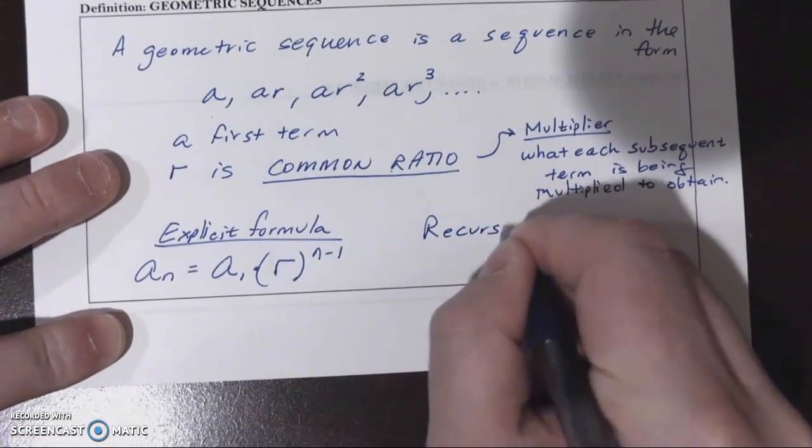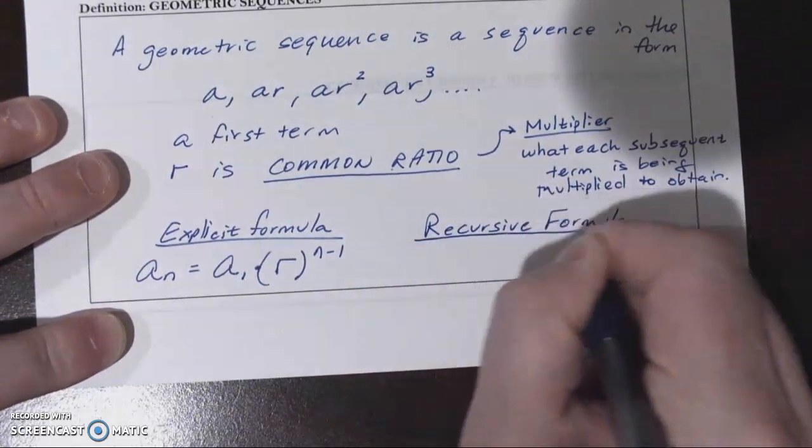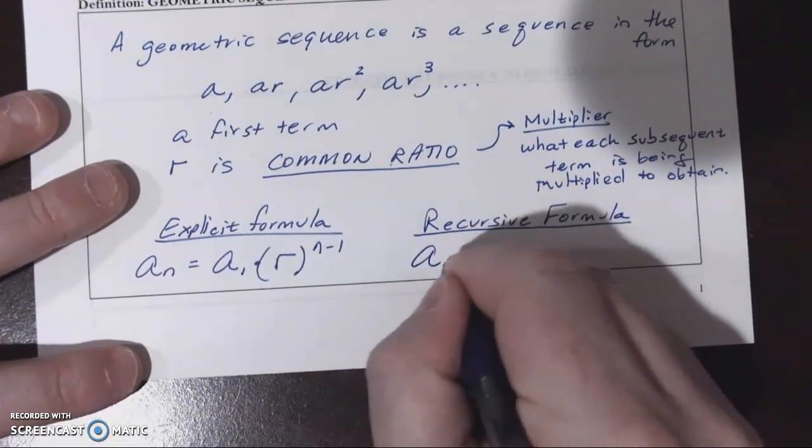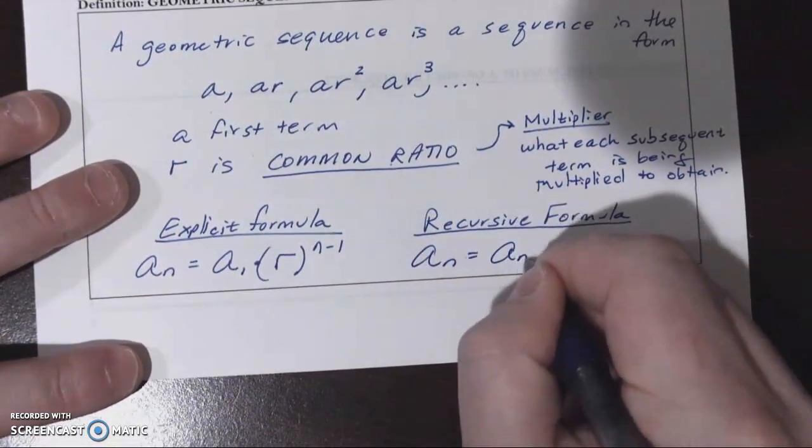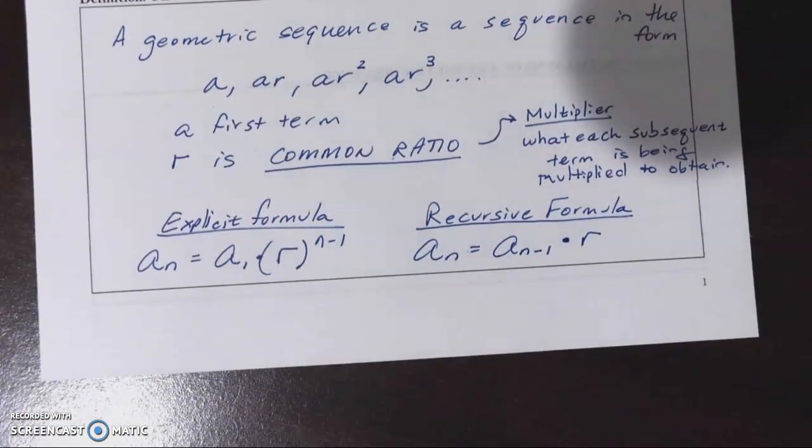And then the recursive formula for a geometric sequence, very simple, we're just multiplying each preceding term by R. So the Nth term would equal the term before it times the common ratio.